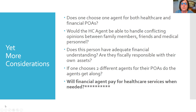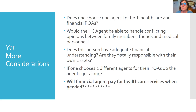When deciding whether one agent should handle both healthcare and financial POAs, consider: can they handle conflicting opinions between family, friends, and medical personnel? Do they have adequate financial understanding and fiscal responsibility? If you choose two different agents, do they get along? Often the financial agent disagrees with the healthcare plan and doesn't want to pay for care — sometimes an inheritance issue. People too often automatically pick their spouse or eldest child, but it may be the youngest child who is more assertive and able to make the tough calls.